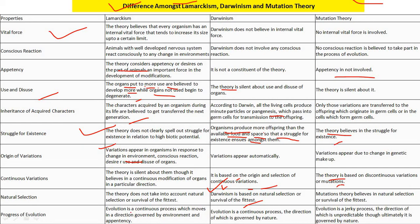Regarding progress of evolution: Lamarckism holds evolution is a continuous process moving in a direction governed by environment and appitency. Darwin concluded the same — evolution is a continuous process with direction governed by nature. Mutation theory states that evolution is a jerky process with direction unpredictable — ultimately governed by nature, but mutations are random and can occur in any direction at any time, unlike Darwin's view that evolution flows in a specific direction.